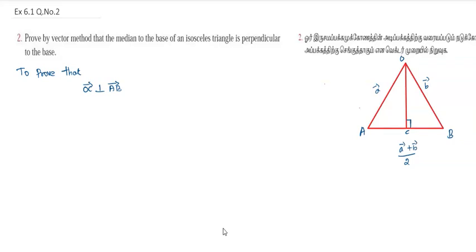Unit 6, question number 2: prove by vector method that the median to the base of the isosceles triangle is perpendicular to the base. To prove perpendicularity, we use the condition that if the dot product is zero, the vectors are perpendicular at 90 degrees. We need to set up the triangle such that the magnitudes of vectors A and B are equal, representing the isosceles condition.